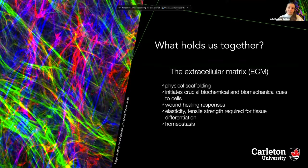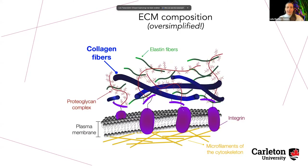Here we have a very oversimplified diagram of how the ECM would look like. We have collagen fibers, elastic fibers, and different kinds of proteins and other components. Those are all going to be in contact with the cell membrane. Today we are going to focus on the collagen fibers, which are going to be the main subject for us in this journey.